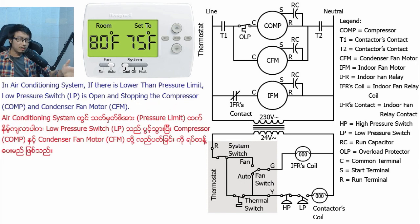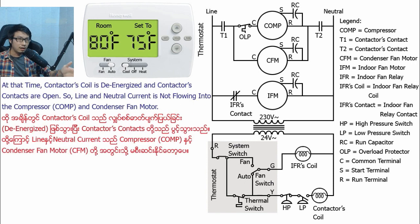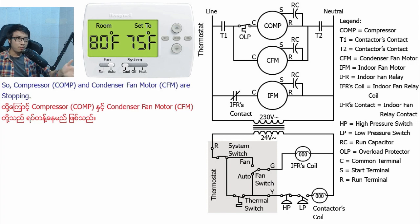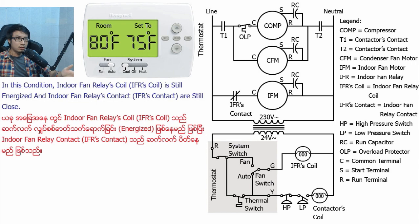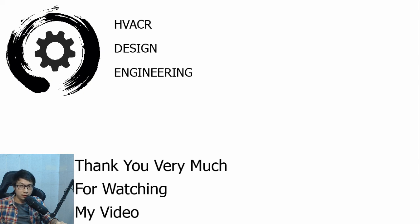In the air conditioning system, if there is a lower suction pressure limit reached, the low-pressure switch opens and stops the compressor and condenser fan motor, because the low-pressure switch disconnects current flowing into the contactor coil. At that time, the contactor coil is de-energized and contactor contacts are open, so line and neutral current is not flowing into the compressor and condenser fan motor and they stop. In this condition, the indoor fan relay coil is still energized and indoor fan relay contacts are still closed, so the indoor fan motor is still running. Thank you very much for watching my video.